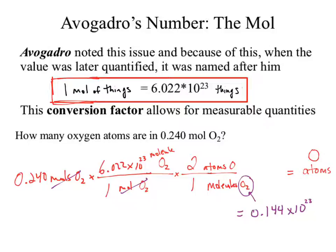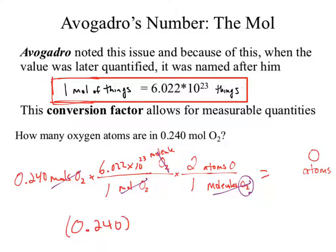So if we multiply that answer by two, we're golden. The calculation would be: molecules of O2 cancel, and we take 0.240 times 6.022 times 2 times 10 to the 23rd.